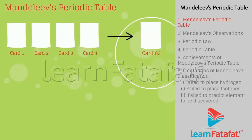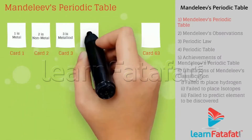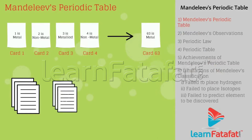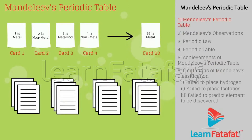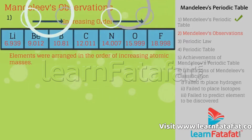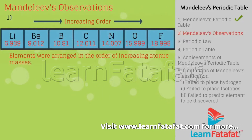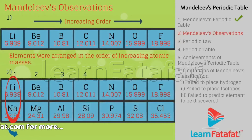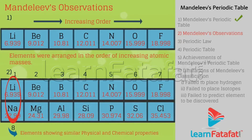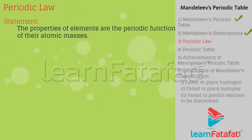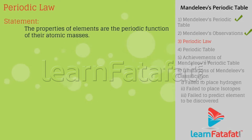He took 63 cards. On each card, he wrote down properties of one element. He then sorted these cards based on similar properties. Mendeleev's observations: most elements were arranged in the order of increasing atomic masses, and elements with similar physical and chemical properties occur again after a fixed number of elements. Periodic law.